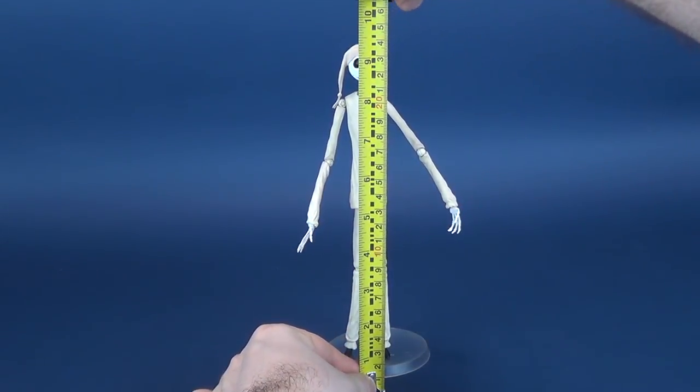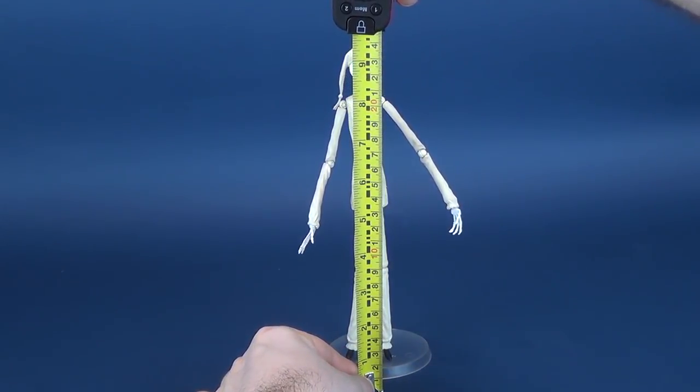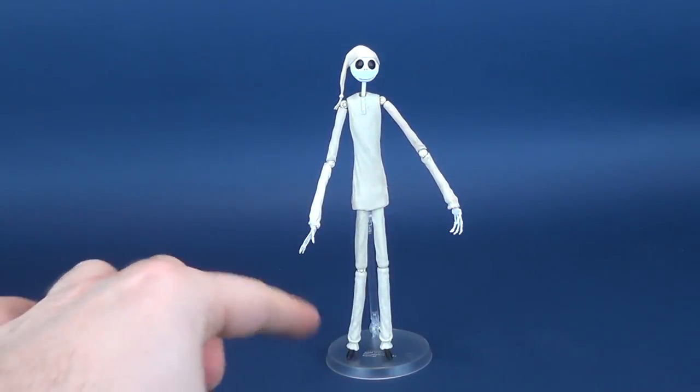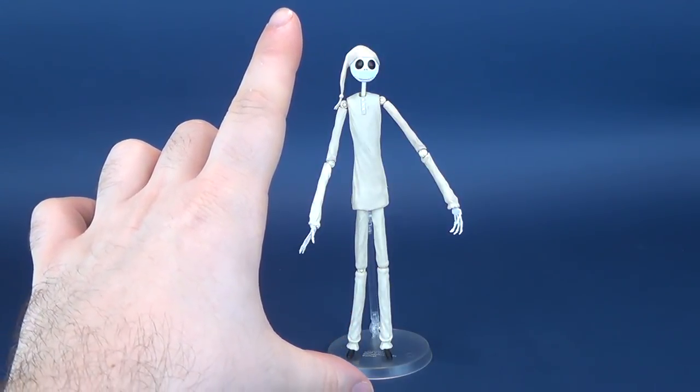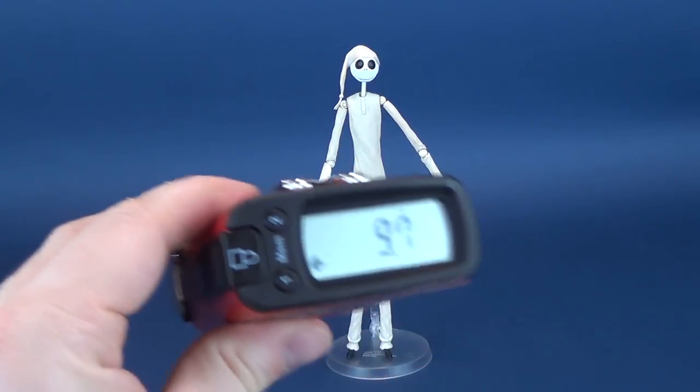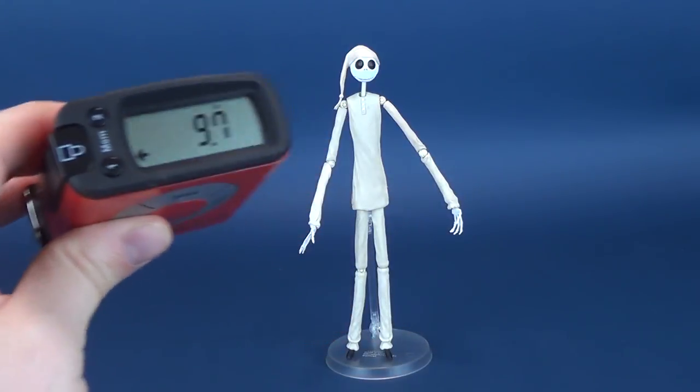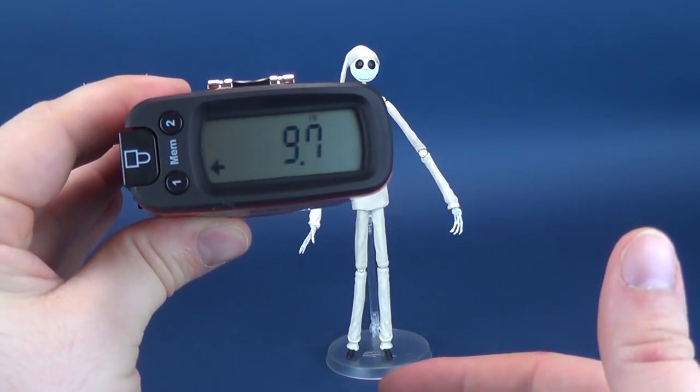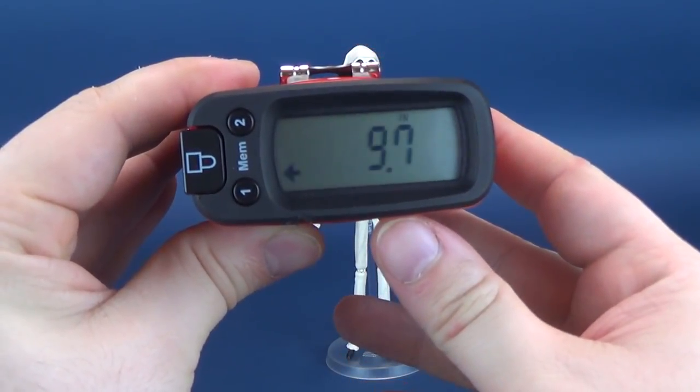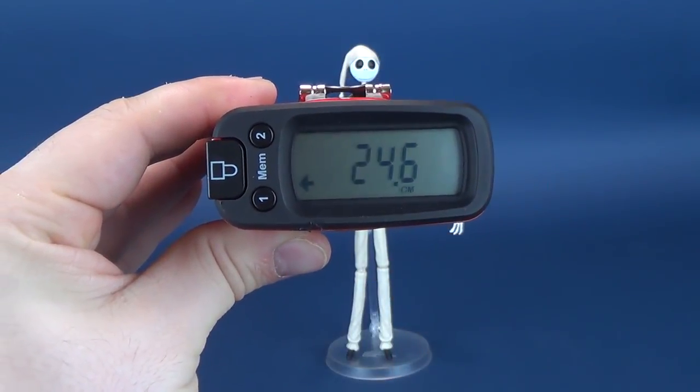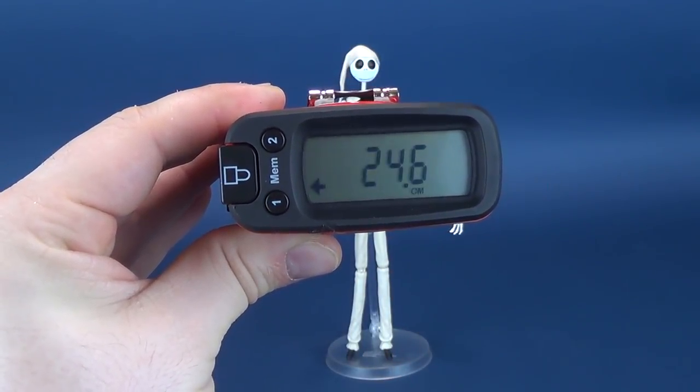Now for those curious as to how tall Pajama Jack stands, let me answer that question with some dimensions. I did actually include the display stand being the nature of the fact that these characters are quite spindly, it makes things a little difficult for them to stand solely on their own. From the bottom of the stand to the top of Jack's head, you're looking at 9.7 inches in height, or 24.6 centimeters tall.